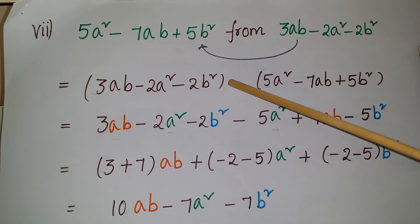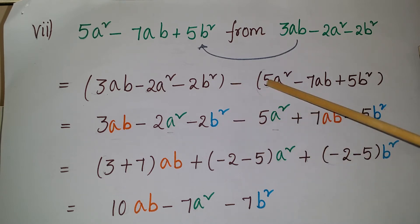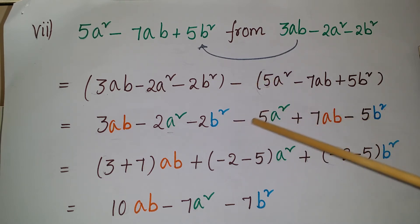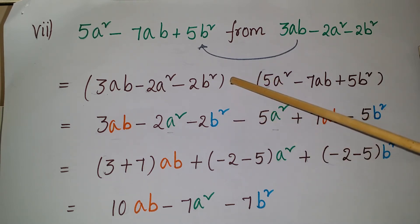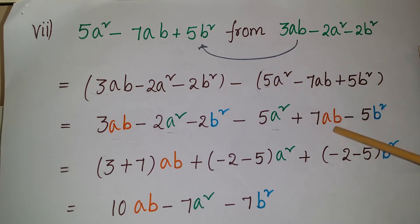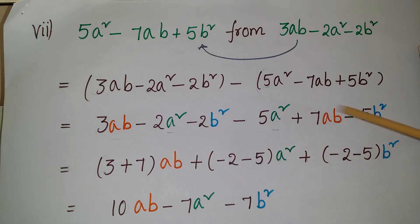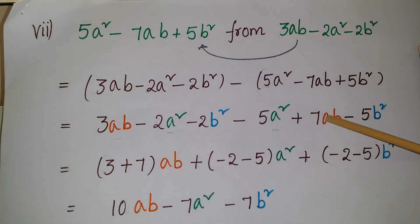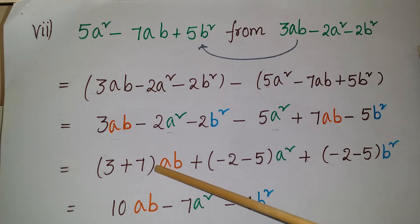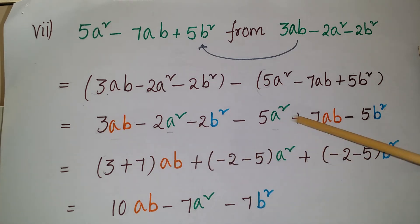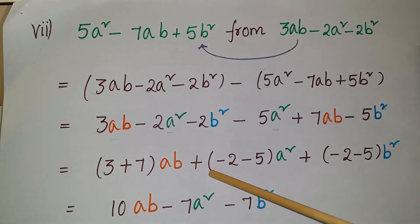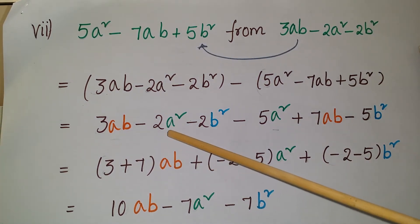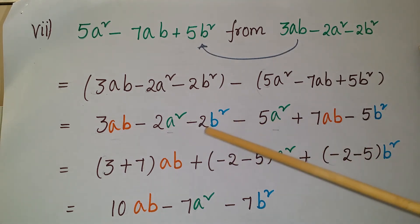Now remove the brackets: 3ab minus 2b squared, and then minus of plus gives minus 5a squared, minus of minus gives plus 7ab, and minus of plus gives minus 5b squared. Now see the like terms: 3ab and 7ab, so take the numerical coefficients: 3 plus 7 into ab. Then a squared terms: minus 2 minus 5 into a squared.